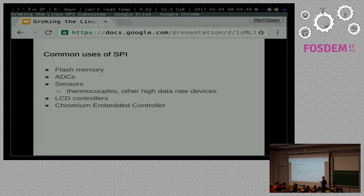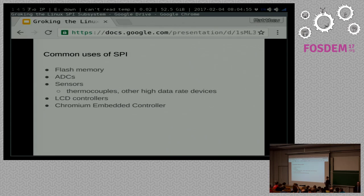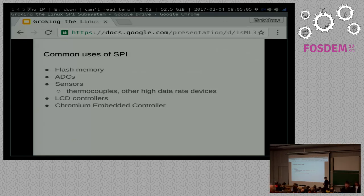One of the themes when we look at all of these is that they're all fairly high-speed type devices: ADCs, thermocouples sampled very quickly, LCD controllers that can have a very high rate of speed if they're a color controller.